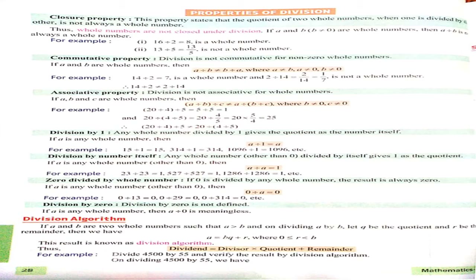Next, 0 divided by a whole number: if 0 is divided by any whole number, the result is always 0. If A is any whole number other than 0, then 0 divided by A equals 0. See the example: 0 divided by 13 equals 0. 0 divided by 29 equals 0.